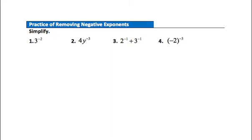Practice question 1: 3 to the negative second power. First remove the negative exponent to get 1 over 3 squared, then square the 3 to give 1 ninth. Question 2: only the y is taken to the negative third power, so the answer is 4 in the numerator and y to the third in the denominator — 4 over y cubed. Nothing more to simplify.